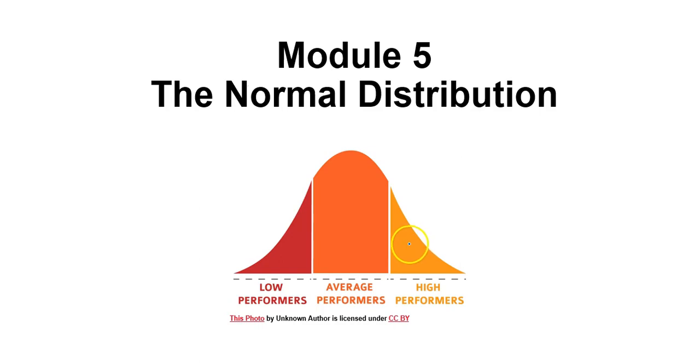We use the normal distribution when it comes to continuous data. Remember, continuous data are data values that can take on decimal form to as many decimal places as you would like.